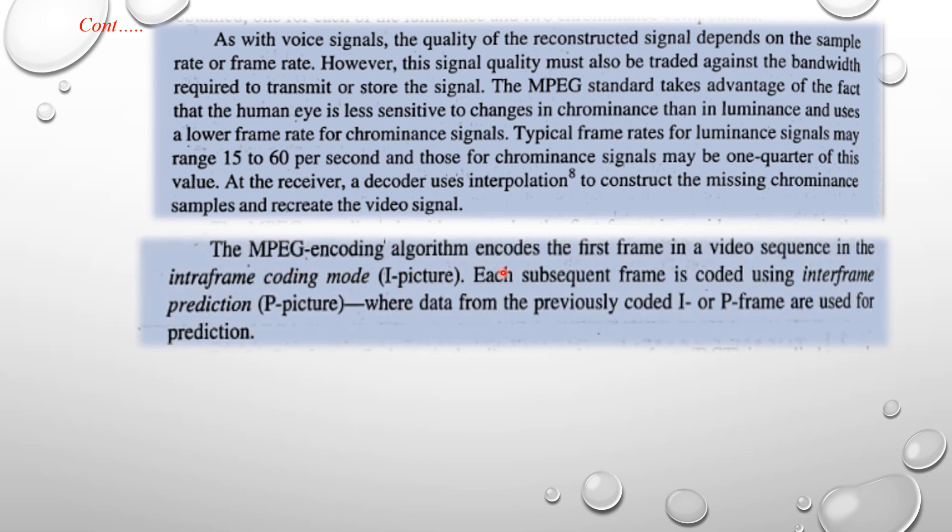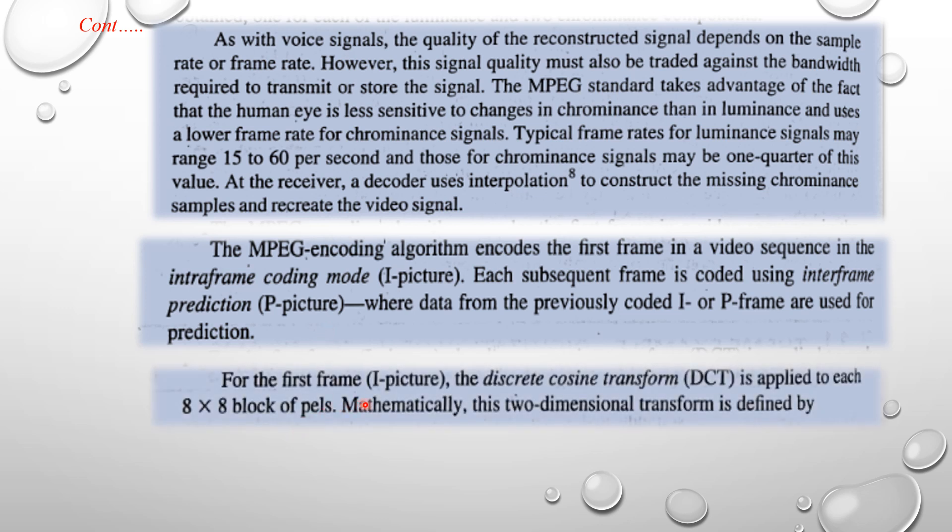The MPEG encoding algorithm encodes the first frame in the video sequence in the intra-frame coding mode or I-pictures. Each subsequent frame is coded using inter-frame prediction or P-pictures, where data from the previously coded I or P frames are used for predictions. In predictions, we use P-picture and I-pictures.